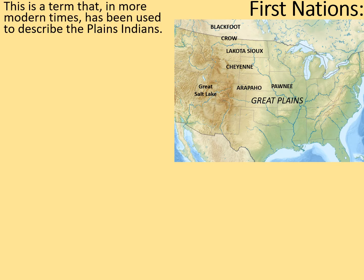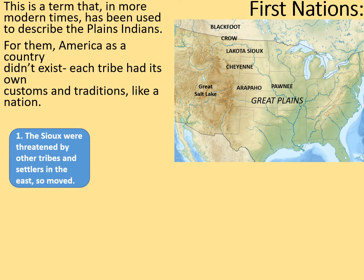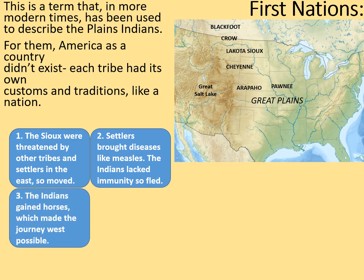The First Nations. This is a term that in more modern times has been used to describe the Plains Indians and other groups of indigenous Americans. For them, America as a country didn't actually exist. Each tribe had its own customs and traditions like a nation. The Sioux were threatened by other tribes and settlers in the east, so they moved. Settlers brought diseases like measles, and the Indians lacked the immunity to fight this, so they fled. And the Indians gained horses, which made journeys west possible, particularly from the Spanish early on.